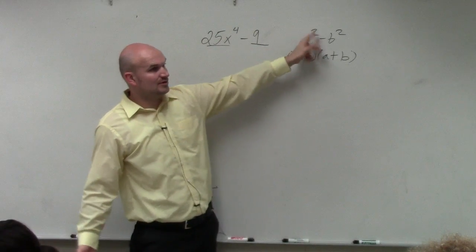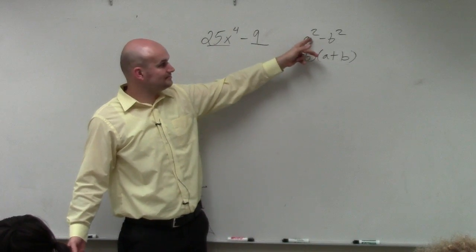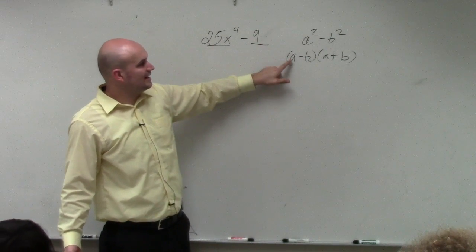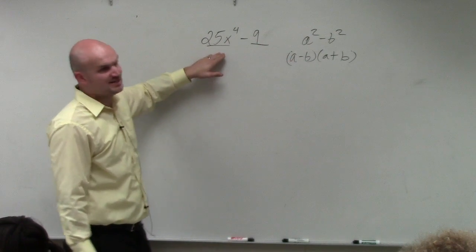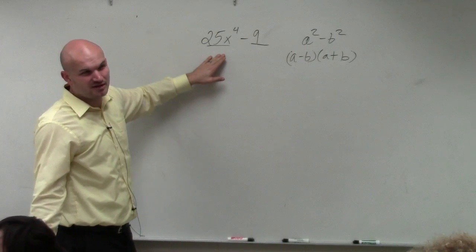So if I have a squared minus b squared, if a squared, or since a squared is squared, I just need to figure out what a is. So basically, I do that by just taking the square root of my a squared.